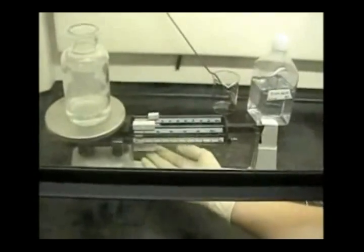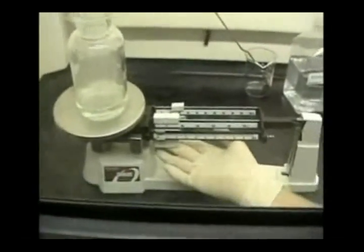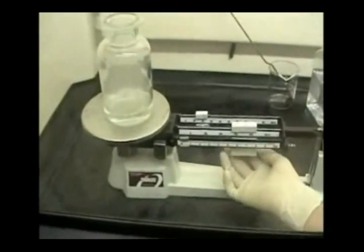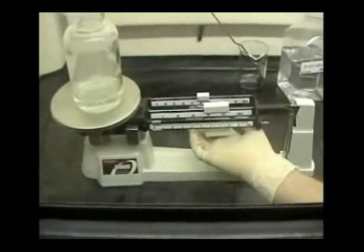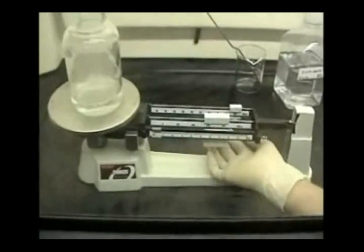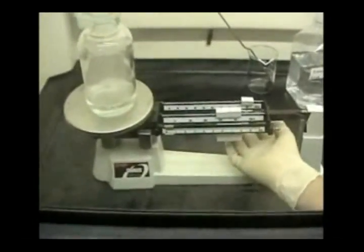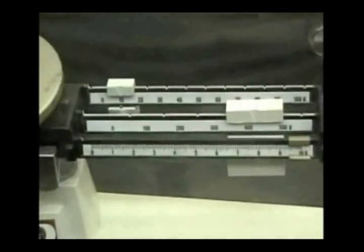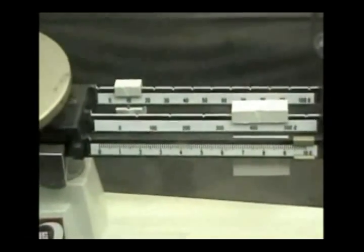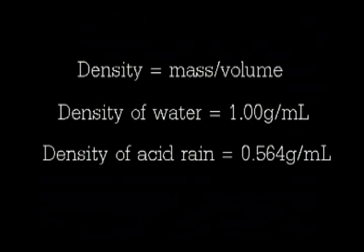We are now taking the mass of the glass bottle, cover glass, and the acid rain together. The total mass is 419.9 grams. In order to get the density, we subtracted the mass of the glass bottle from the total mass and divided by 15 milliliters.